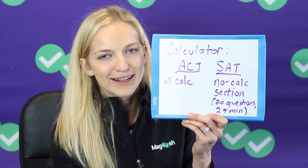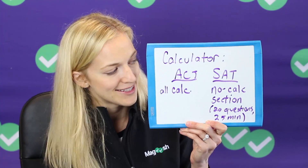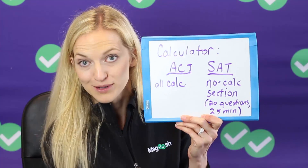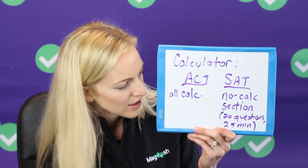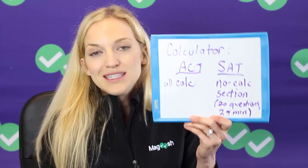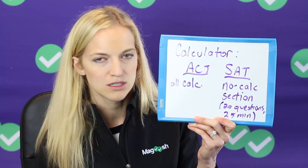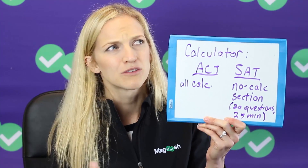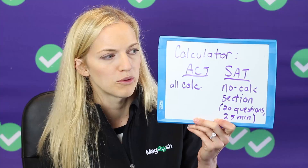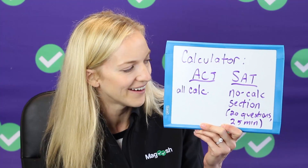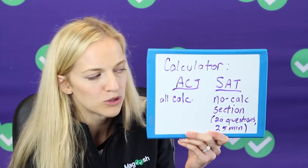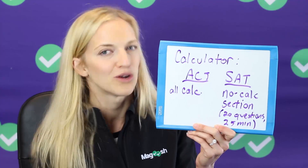Regarding a calculator, one of the big things about the new SAT is that it has a no-calculator section — that is 20 questions in 25 minutes that you have to go through with no calculator. For the most part those questions don't need a calculator, but it doesn't mean you're not doing calculations. If you're not comfortable doing basic math or manipulating equations — for example, figuring out the slope of an equation or evaluating a function — without your calculator in hand, that's something to be aware of.